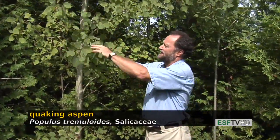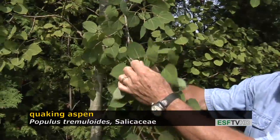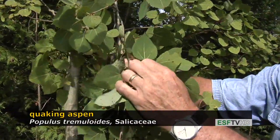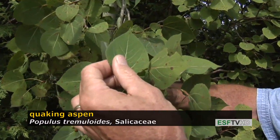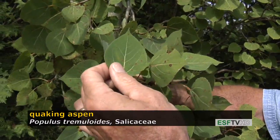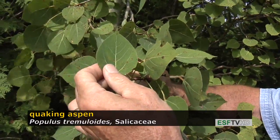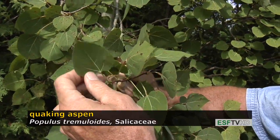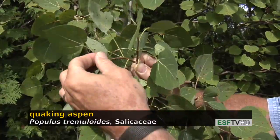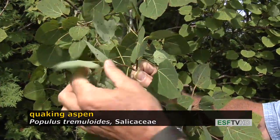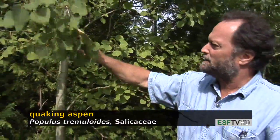The leaves are quite distinct. They are nearly round, or suborbicular, in shape, and typically have a fine margin of either rounded teeth or sharp teeth — so the teeth are either crinate or serrate. The leaves turn gold, or some form of gold to yellow, in the fall. The petioles are very flat, giving the leaf the ability to shimmer in the slightest breeze, hence the common name of quaking or trembling aspen.